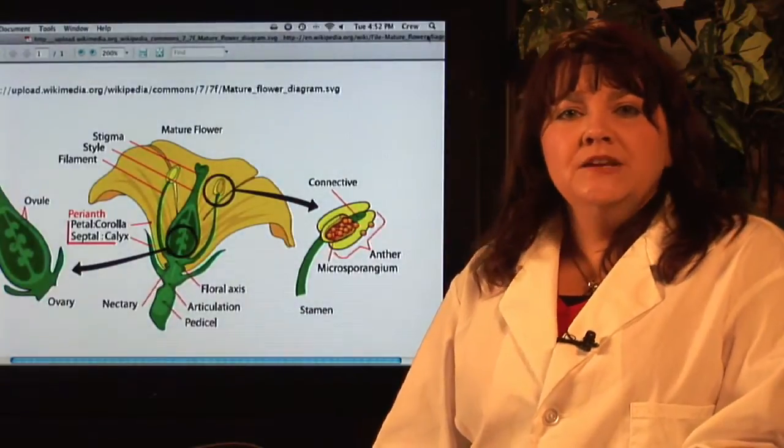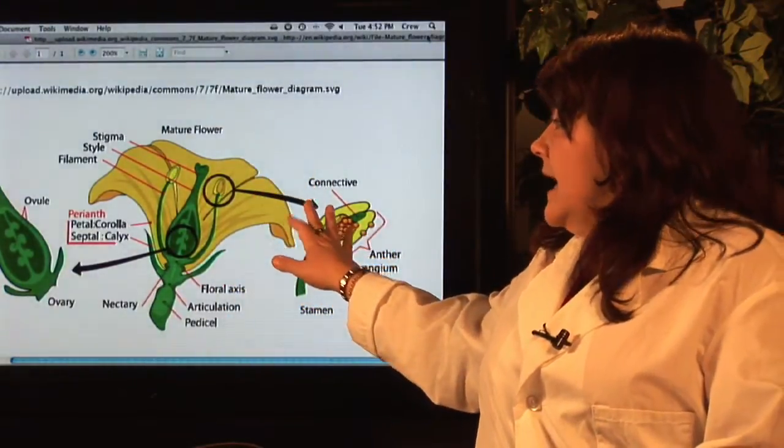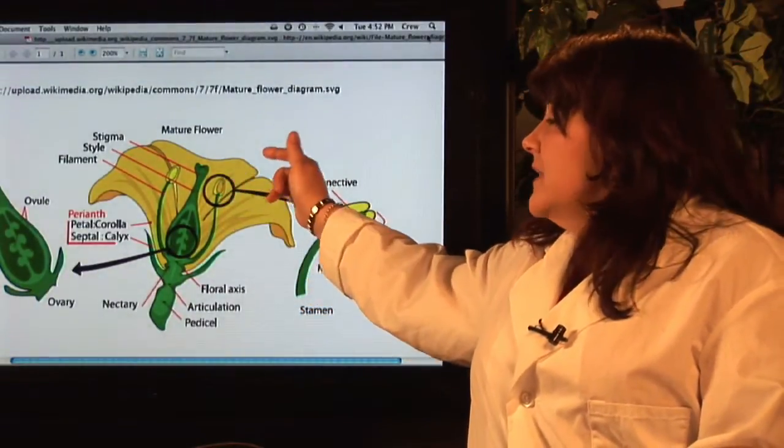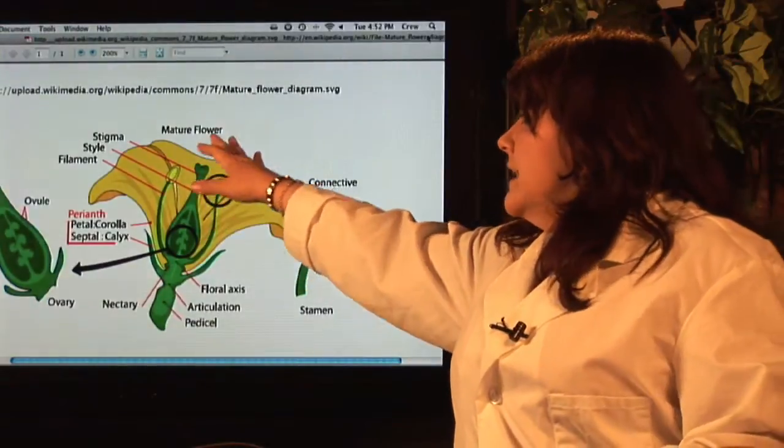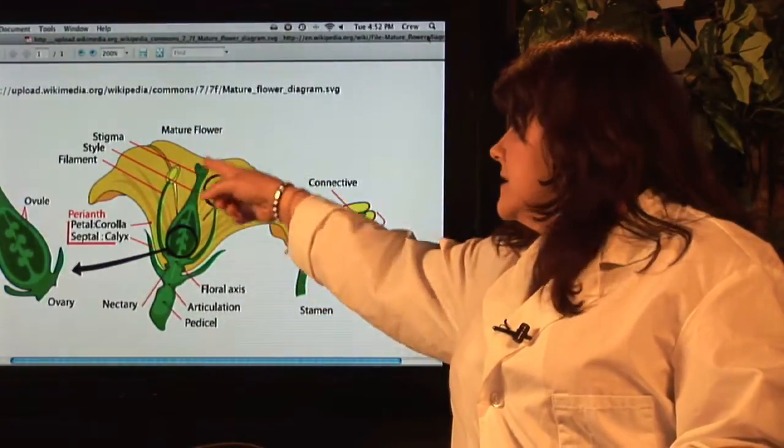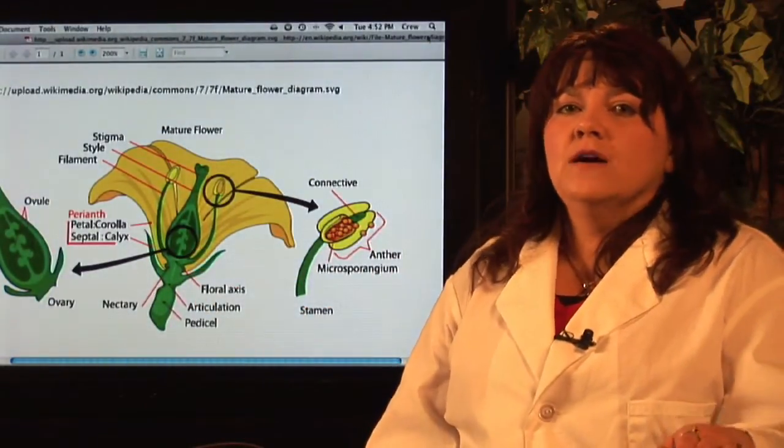If you've ever heard the term pollination, you might have known that a bee or a butterfly or something like that landing on a flower gets some pollen grains on its leg and then flies to another flower, and as it's feeding on that flower, it will drop some of the pollen grains from the other plant into the new flower, and that's how plants actually get their genetic material crossed.